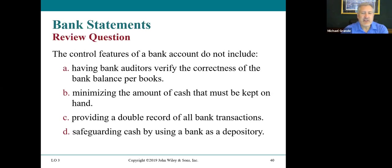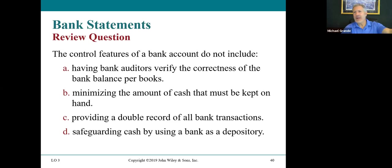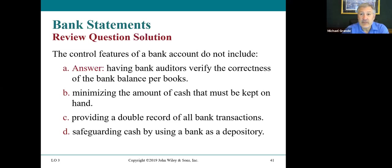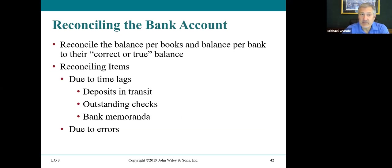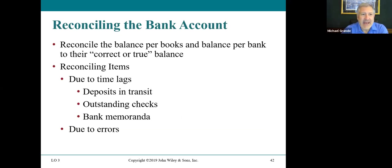Review question: the control features of a bank account do not include which option? Having bank auditors verify the correctness of the bank balance per books — that is the answer, because bank auditors have nothing to do with the per-books balance. The other options are all true: minimizing cash on hand, providing a double record of all bank transactions, and safeguarding cash by using the bank as a depository.